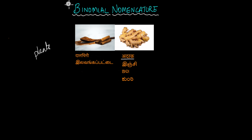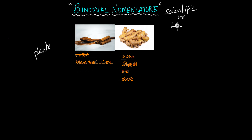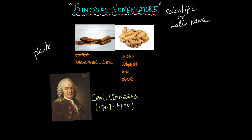That is what binomial nomenclature is. This is the method by which each organism is given its scientific or Latin name. I will explain in just a while why it is called a Latin name. Now this need for nomenclature is not something new. It has been there for a long time, even before the 1700s.